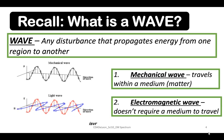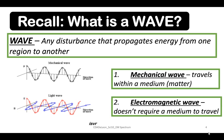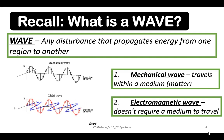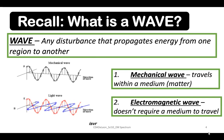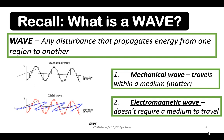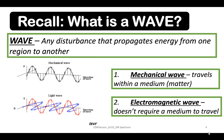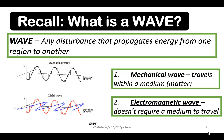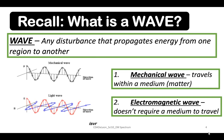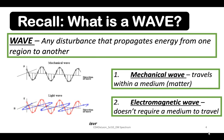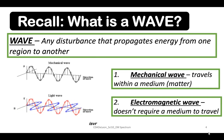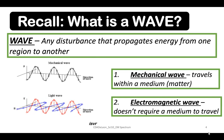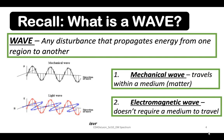What is a wave? A wave is any disturbance that propagates energy from one region to another. We have two types of waves. First is the mechanical wave, which travels within a medium or matter — it can be solid, liquid, or gas. While a light wave is a wave that doesn't require a medium to travel.